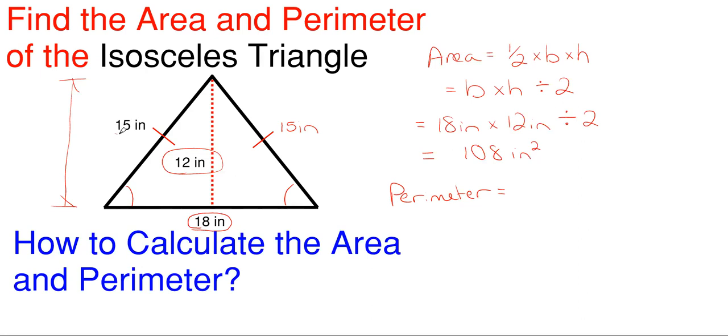What we're going to do is take each of the sides. So we have 15 inches plus 15 inches plus 18 inches to get all the way around. The 12 inches is the height. It is not the distance around the object; it is an internal distance.